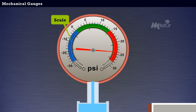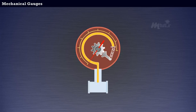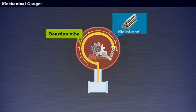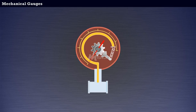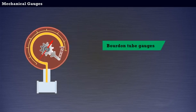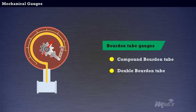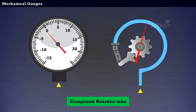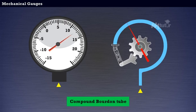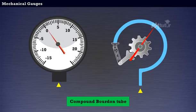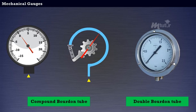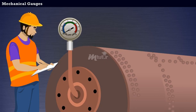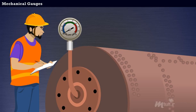This is how the Bordon tube pressure gauge works. Generally, Bordon tubes are made of bronze or nickel steel. Depending upon the purpose for which they are required, Bordon tube gauges are made in different forms. Some of them are Compound Bordon tube and Double Bordon tube. Compound Bordon tube is used for measuring pressures both above and below the atmospheric pressure, and Double Bordon tube is used where vibrations are encountered. This pressure gauge is mostly used in high pressure conditions, for example, in chemical industries, steam power plants, etc.